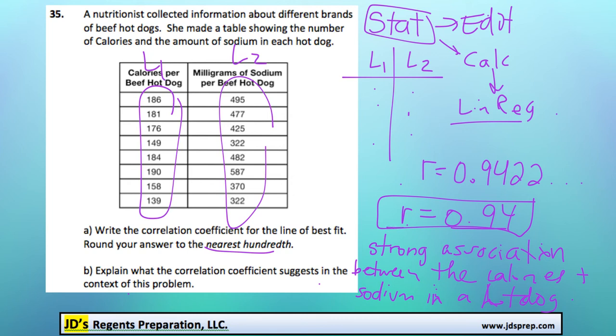The closer r is to 1, the stronger the association is. So a perfect correlation would be if r was equal to 1. I think that's all that's needed for this question. Hope it was helpful, and thanks for visiting JD's Regents Preparation.